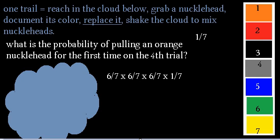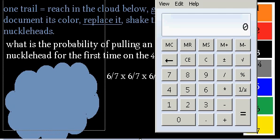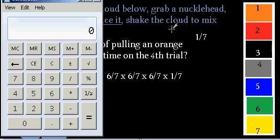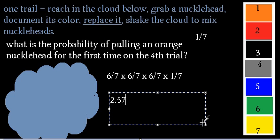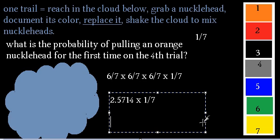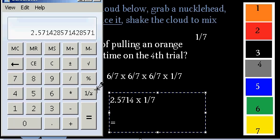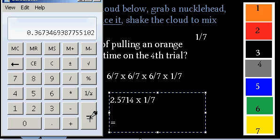Let's grab the calculator. Six divided by seven equals that value, and we multiply that three times — so times three equals. Then we take that result and go times one divided by seven equals.